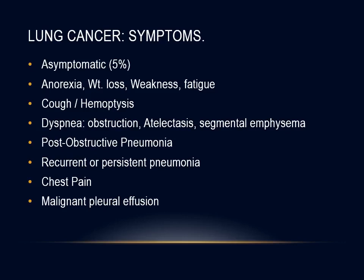The majority of patients who present with clinical signs and symptoms due to lung cancer already have advanced disease. The most common presenting manifestation is cough in about 50 to 75% of patients and hemoptysis in about 25 to 50%, secondary to obstruction or atelectasis. Segmental emphysema can present in about 25% of patients. Patients may have a history of persistent infiltrate or recurrent pneumonia in the same part of the lung, representing post-obstructive pneumonia. Chest pain can be present in 20%. Any of these manifestations should prompt additional testing right away.